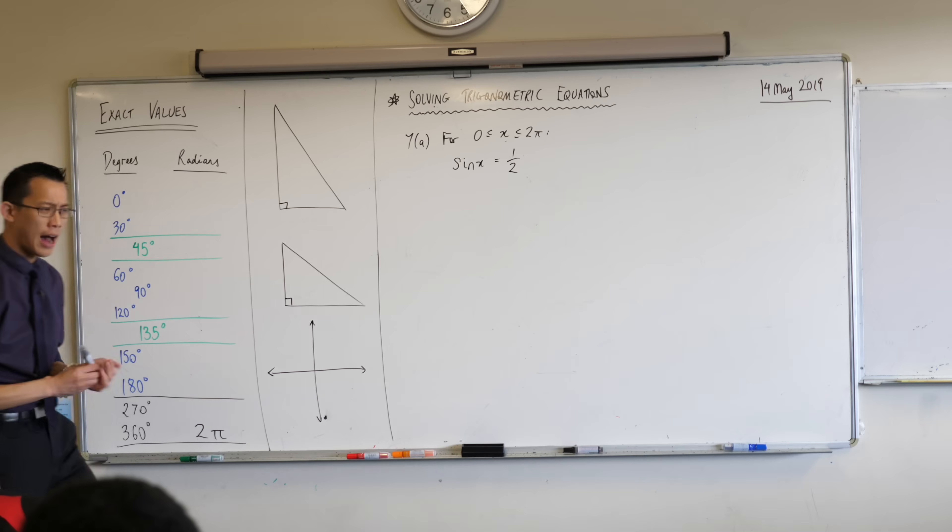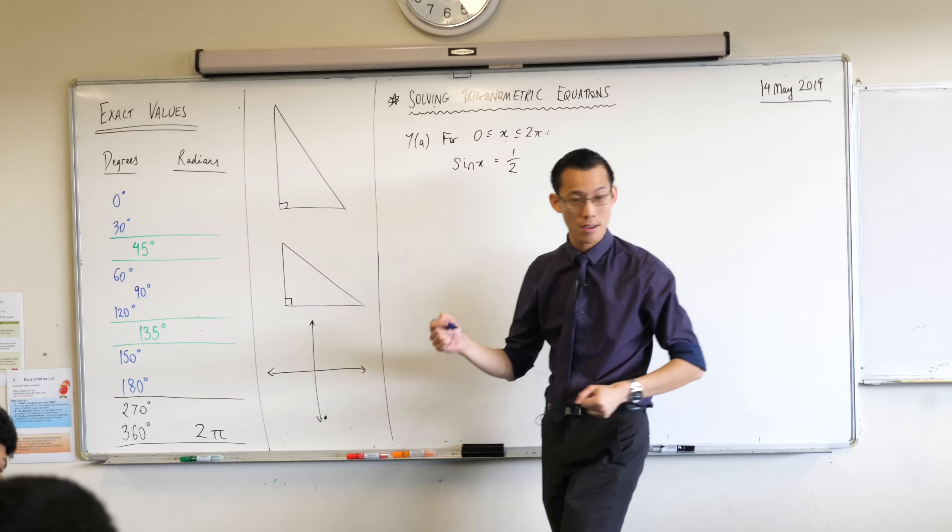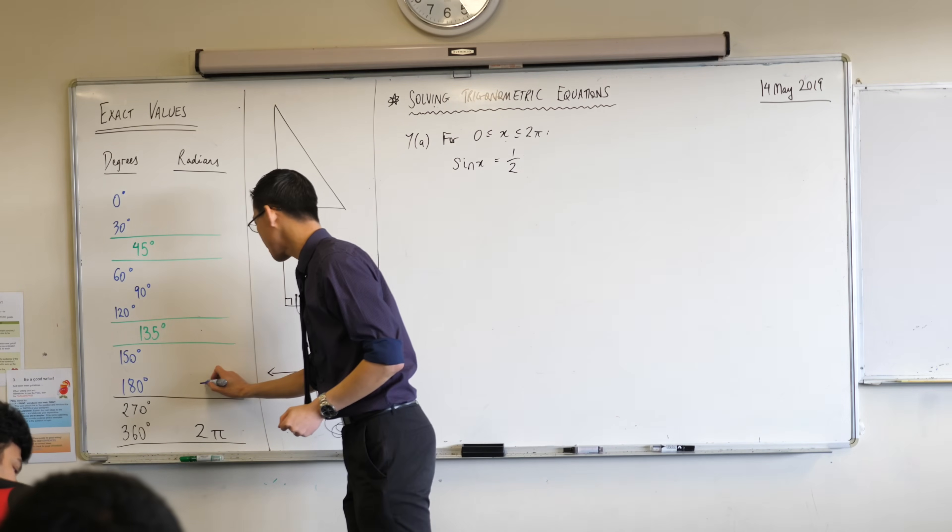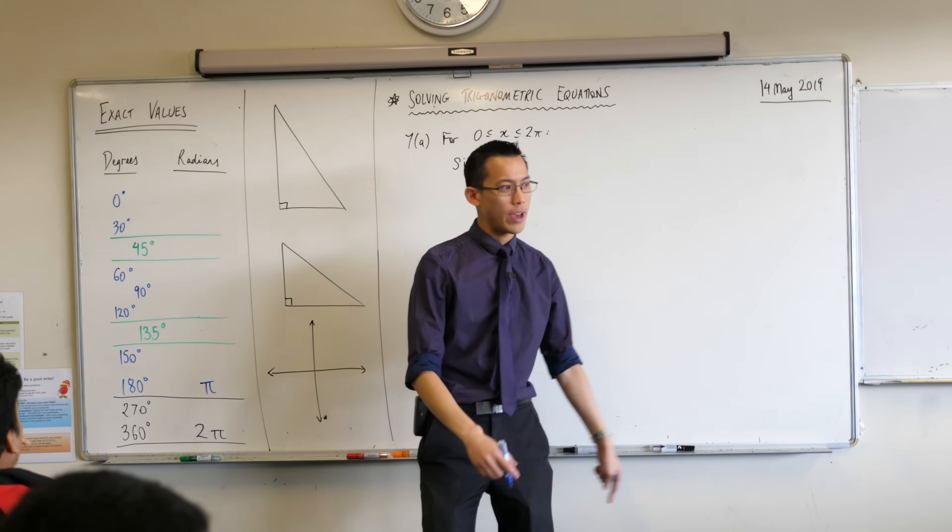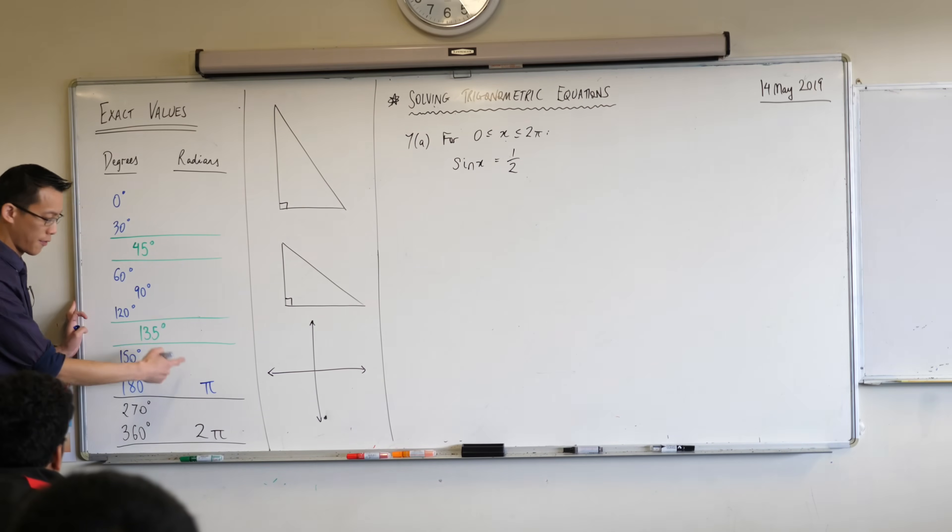The next one we did was half of that. So 180 degrees in radians will be π radians, and then we halved again. We got up to 90 degrees so if I halve again I'm going to get π/2.